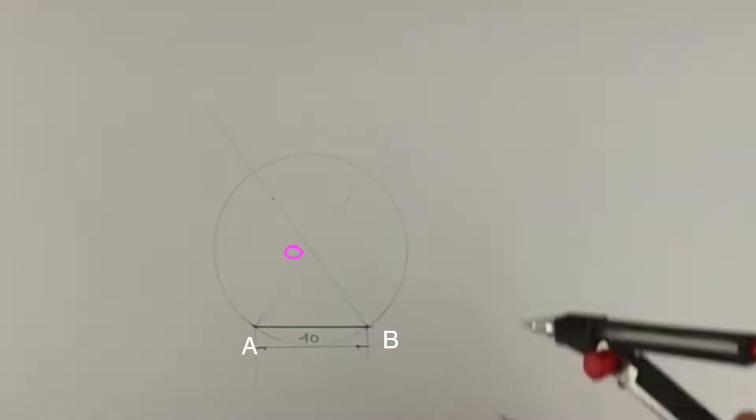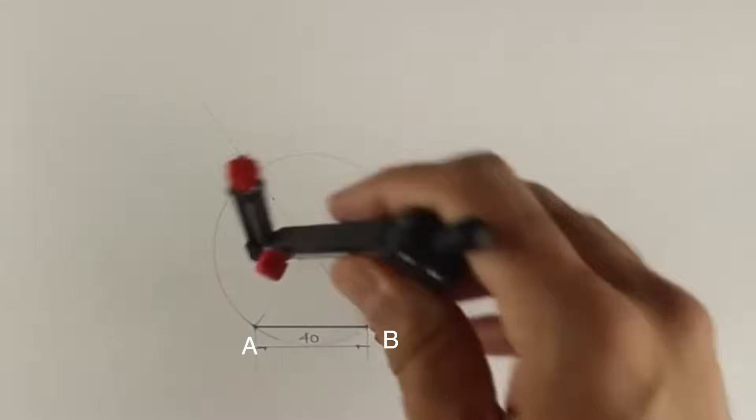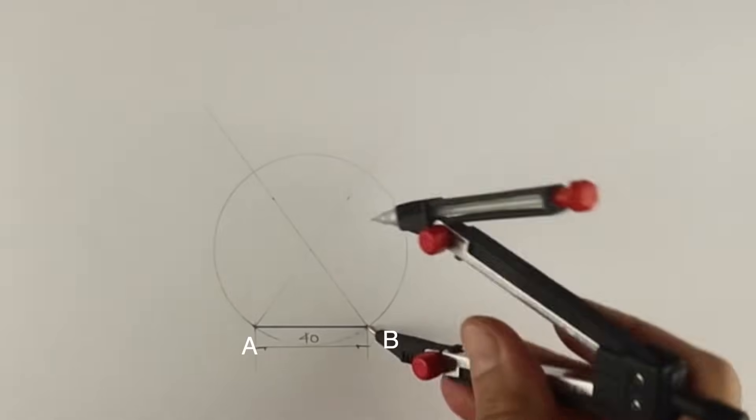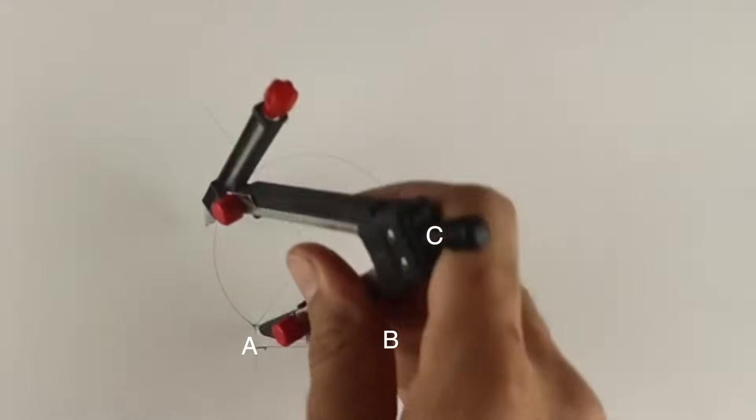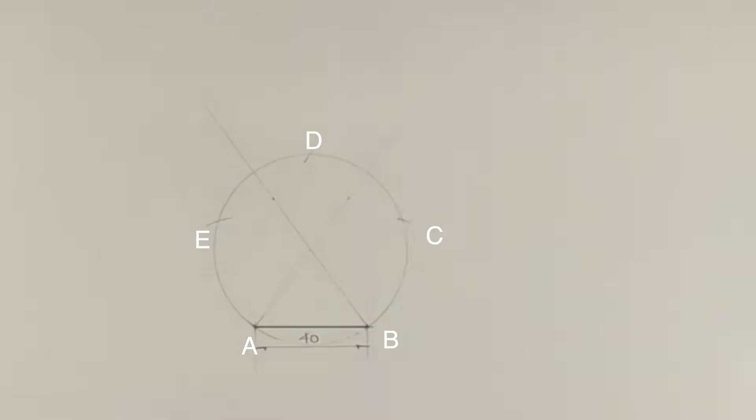Then take A to B in your compass and from B you cut on the right side, you'll get C. And from A you cut on the left side, you'll get E. Now from C, you cut on the upper side.